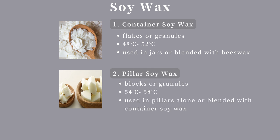Pillar soy wax has a melting point typically between 54°C and 58°C. Its shrinkage feature helps us easily demold a candle. As the name implies, it can be used alone to make pillar and geometric candles. Pillar candles can be made using pillar soy wax alone or blended with container soy wax and white beeswax. Please avoid confusion when purchasing by noting their different melting points.